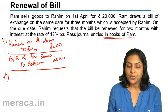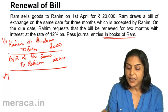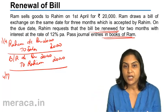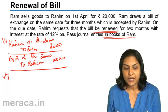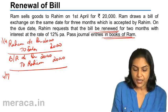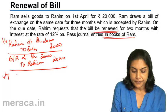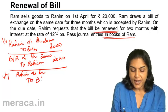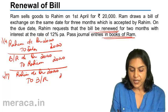On the due date, Rahim requests that the bill be renewed. In order to renew the bill, the old bill is cancelled and a new bill is created. Let us first cancel the old bill: the entry would be Rahim's account debit — reinstated as a debtor — and bill receivable credited, to cancel the old bill.